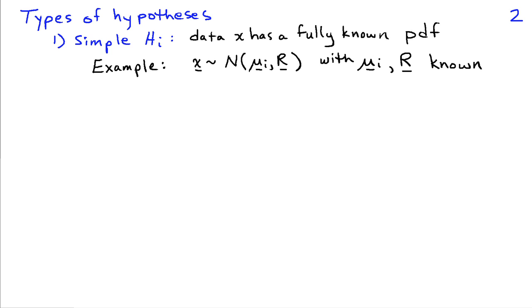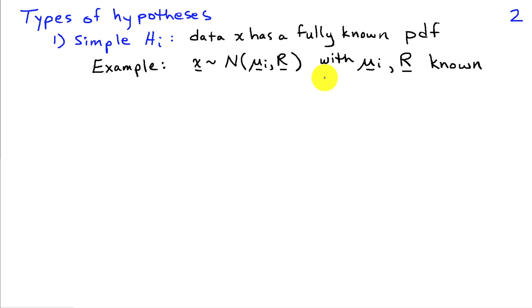We also need to distinguish between different types of hypotheses. A simple hypothesis H sub i corresponds to a scenario where the data corresponding to that hypothesis has a fully known probability density function. For example, if under hypothesis H sub i, X — my observation — is Gaussian distributed with mean mu sub i and covariance matrix R, and as long as I know mu sub i and R, meaning I fully know the PDF, then this would be a simple hypothesis.